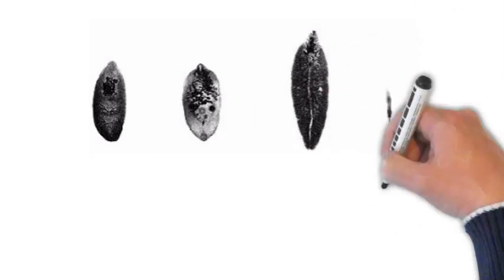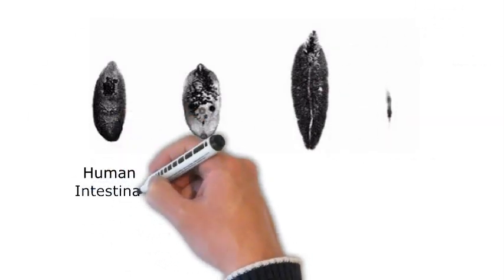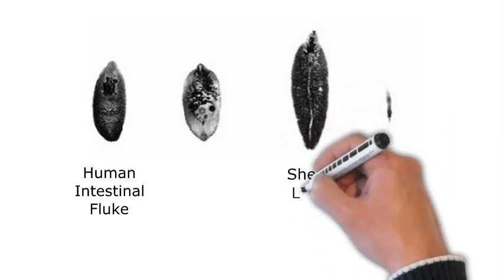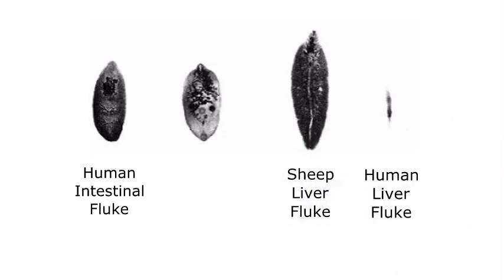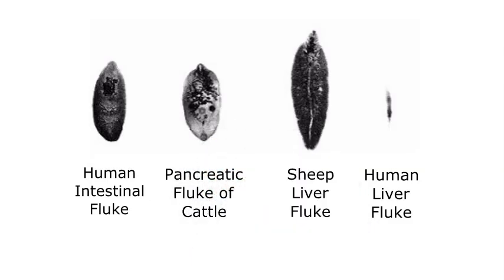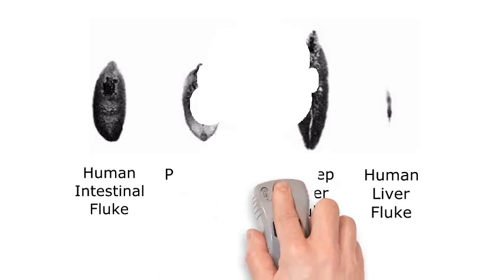Four common flukes are: human intestinal fluke, human liver fluke, sheep liver fluke, and pancreatic fluke of cattle. Don't let the terms sheep and cattle mislead you. They are all found in humans.